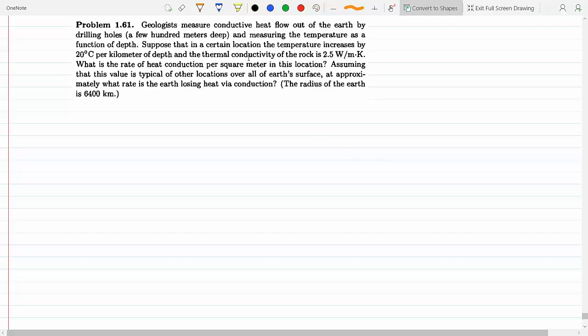Geologists measure conductive heat flow out of the earth by drilling holes a few hundred meters deep and measuring the temperature as a function of depth. Suppose that in a certain location the temperature increases by 20 degrees for every kilometer they dig, and the thermal conductivity is 2.5, that's our KT in Fourier's law of conduction. What is the rate of heat conduction per square meter?